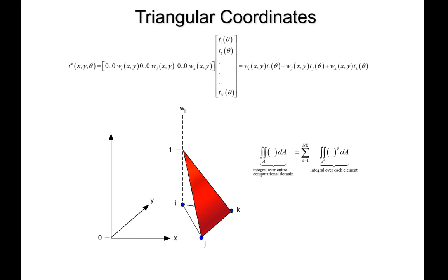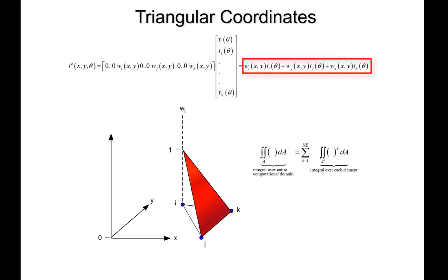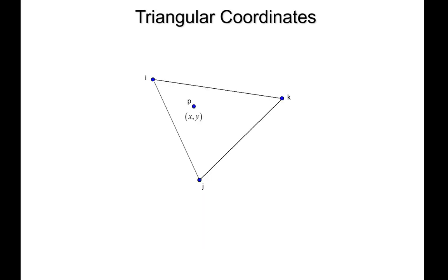We need to know how to integrate and take derivatives of these triangular coordinates in order to assemble the matrices. We'll do this element by element, because within each element only three triangular coordinates are active — wi, wj, and wk. So we need to perform mathematical operations on them within the element. We need to express what w sub i is as a function of x and y at any point inside the element.